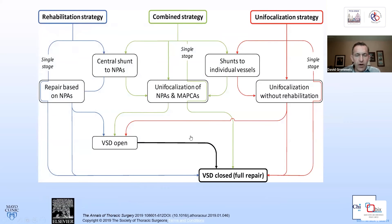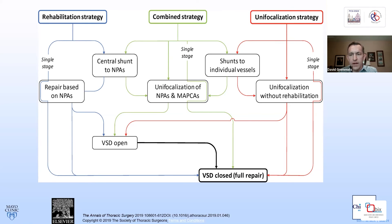From the Annals of Thoracic Surgery 2019, the rehab strategy depends on anatomy: if native pulmonary arteries are adequate, complete repair with RV-to-PA conduit and potential VSD closure can be performed without unifocalization. A combined strategy may involve augmenting the central shunt with unifocalization of MAPCAs in a second stage, then reassessment of VSD closure — a multi-stage approach. Alternatively, when MAPCAs are quite large, a complete single-stage repair can be considered: unifocalize the vessels, place the RV-to-PA conduit, reassess right ventricular pressure, and consider VSD closure all in one stage.